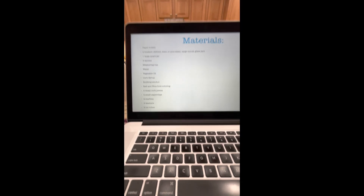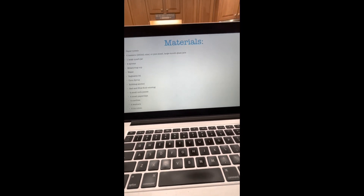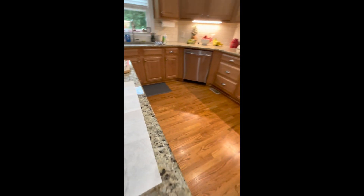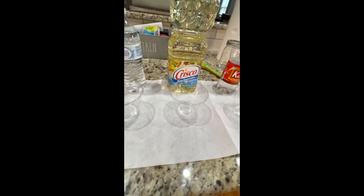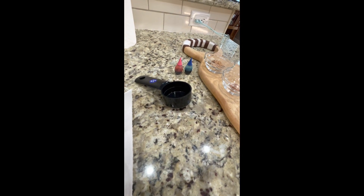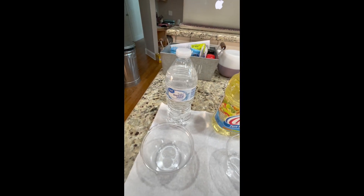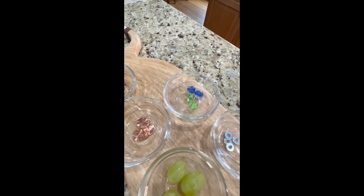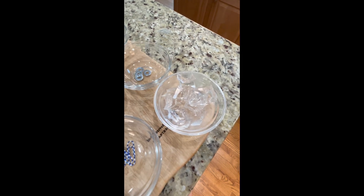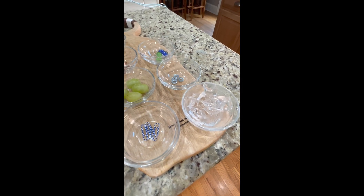This is the long list of materials. We need paper towels, four beakers — our science kit didn't come in so we're using four clear plastic solo cups — one large quart jar, four spoons, a measuring cup, water, vegetable oil, corn syrup, rubbing alcohol, red and blue food coloring, four small corks, four pennies, four grapes, four small paper clips, four marbles, four washers, and ice cubes. I'm going to go grab my helper and then we'll get started.